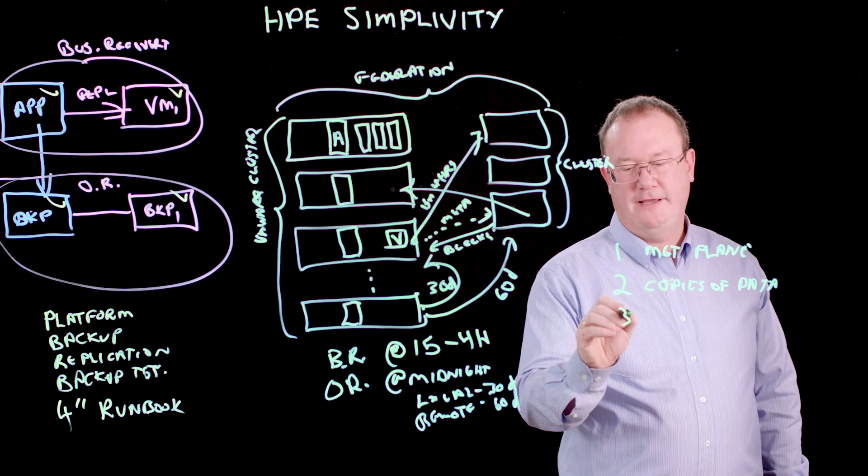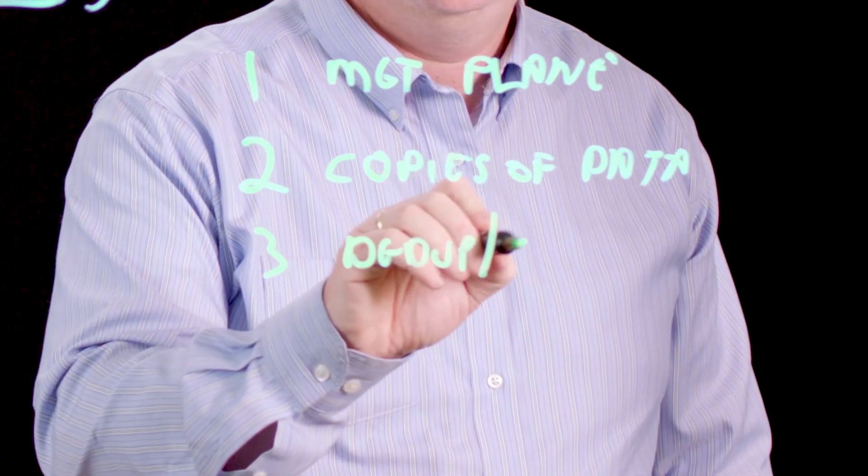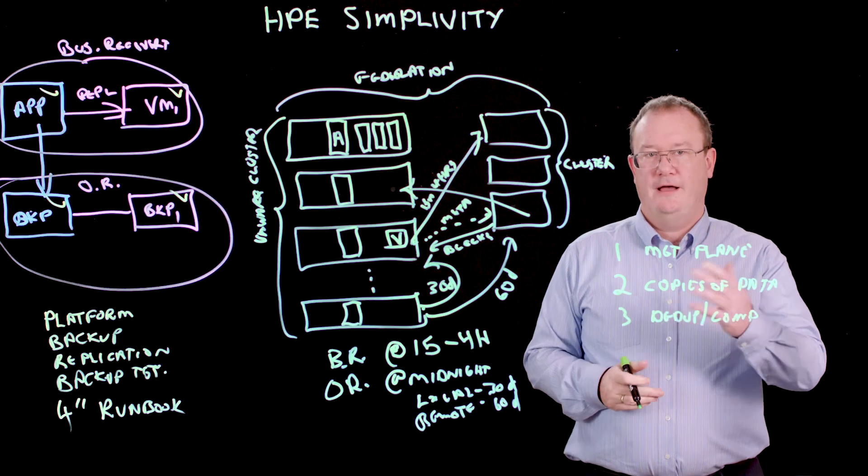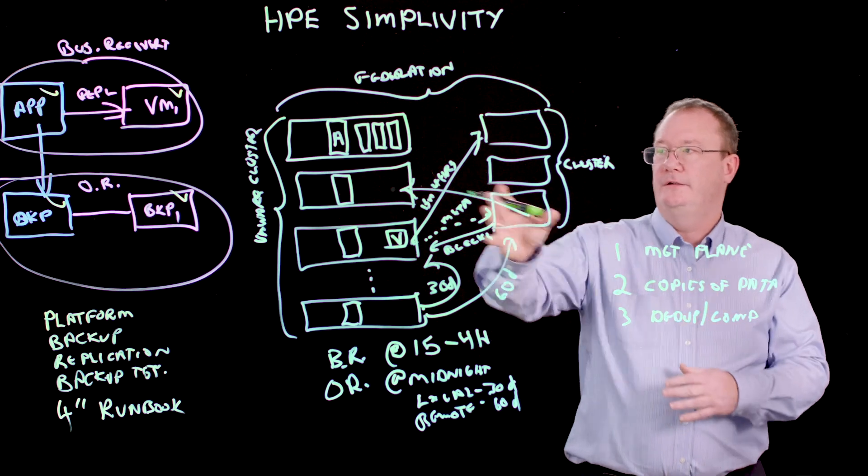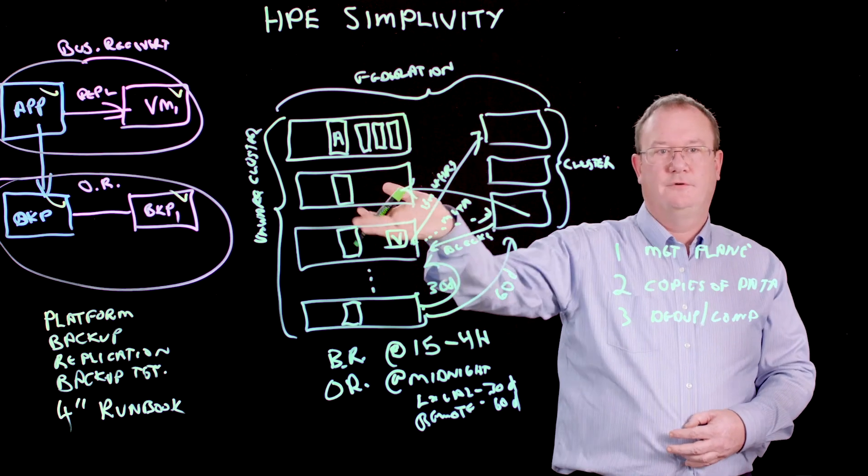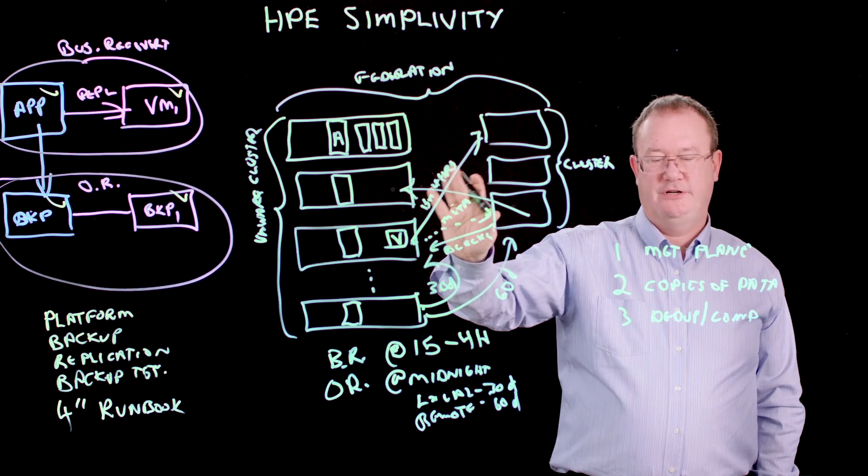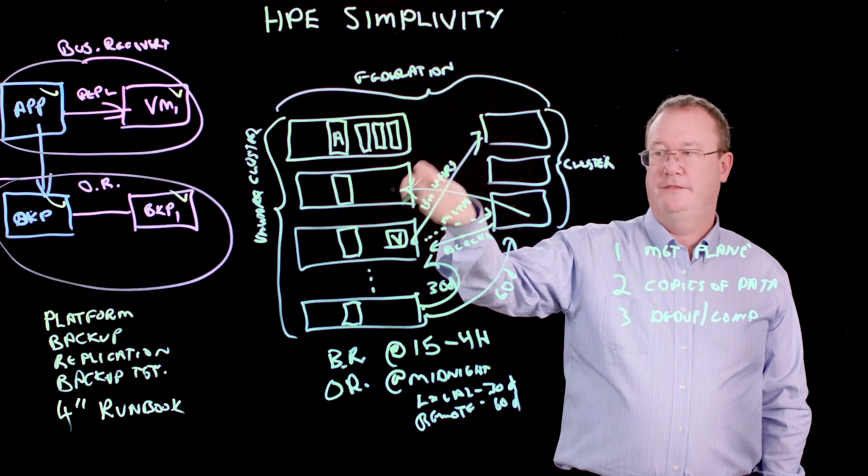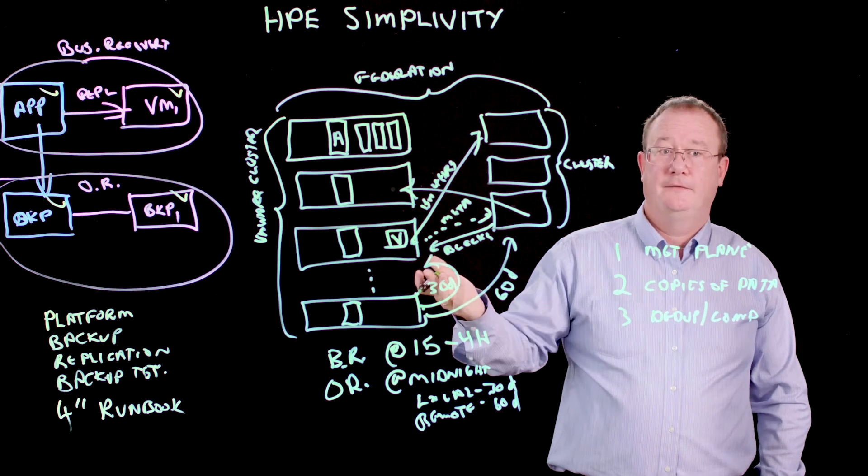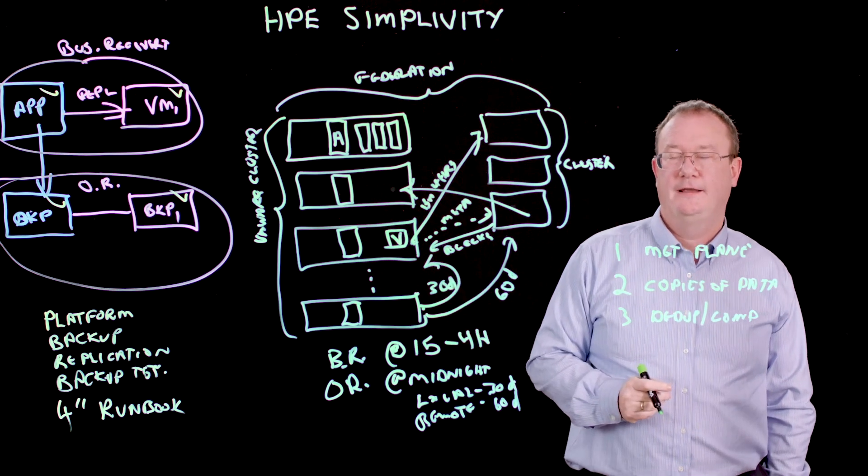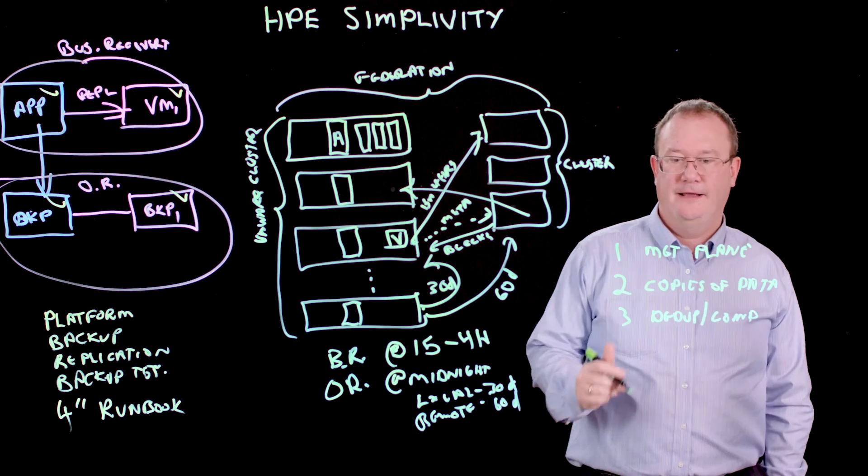We have deduplication and compression everywhere. And by the way, on competing hyperconverged platforms, you have to pay a tax to do that because you're licensing your processors on your hyperconverged platforms for the virtualization layer. And to do deduplication and compression on all the other competing platforms, you have to sacrifice some of your CPU and a bunch of your RAM in order to manage that. But because we have the accelerator card, you don't have to tax your CPU and RAM for that.